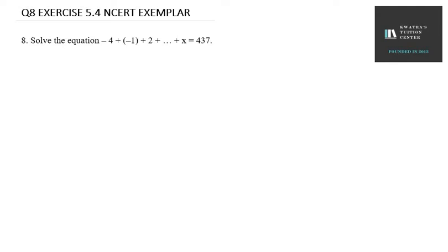Hello everyone, let's start with question number 8 of exercise 5.4. In this we have to solve this equation. We can see the first term and second term are given, so we can find the difference. In the equation itself we are given with x at the end, and the total sum is 437, which means we are not given n and we have to find it.